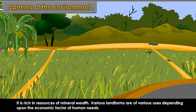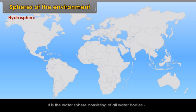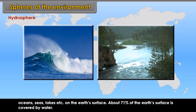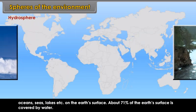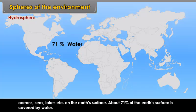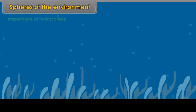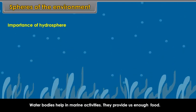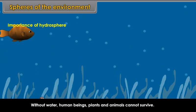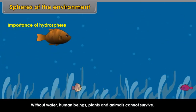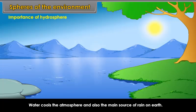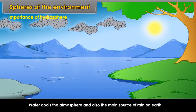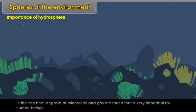Hydrosphere: It is the water sphere consisting of all water bodies — oceans, seas, lakes, etc. — on the earth's surface. About 71% of the earth's surface is covered by water. Importance of hydrosphere: Water bodies help in marine activities. They provide us enough food. Without water, human beings, plants, and animals cannot survive. Water cools the atmosphere and is also the main source of rain on earth. In the seabed, deposits of mineral oil and gas are found, which are very important for human beings.